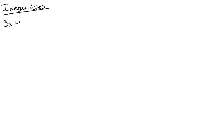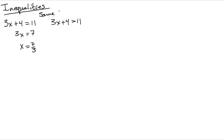Welcome to the instruction on inequalities. We take something that used to look like 3x + 4 = 11 and change it to 3x + 4 > 11. For the equation, we subtract 4 to get 3x = 7, then divide by 3 to get x = 7/3. Over here, the same exact process: subtract 4, we get 3x > 7, then x > 7/3.